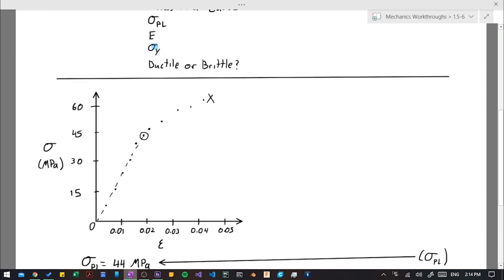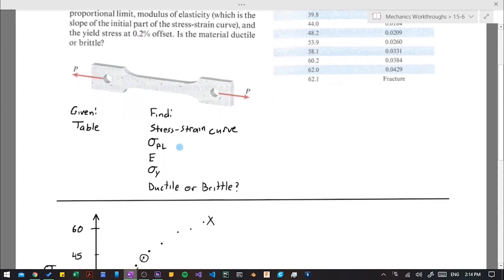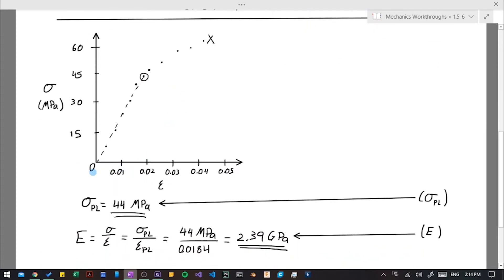Alright, and next we are going to find our yield stress. And it says it's the yield stress at 0.2% offset. So what does that mean? Well, if we look down here, our strain is basically a fraction of an offset. So if we turn it into a percent, this tick mark right here is 1% offset. So 0.2% offset is going to be a fifth of the way along that. And again, this is all visual, so it's going to be a little bit arbitrary. So right here is going to be our 0.2%.